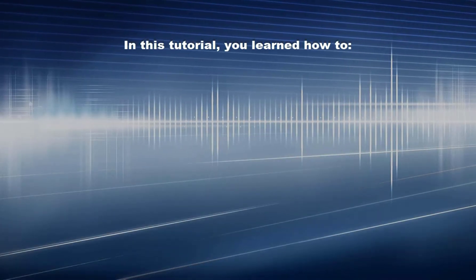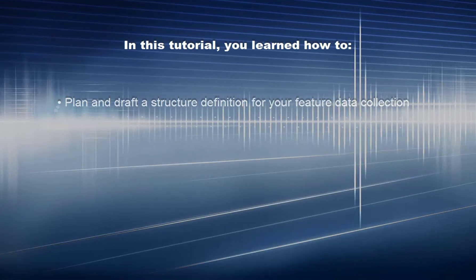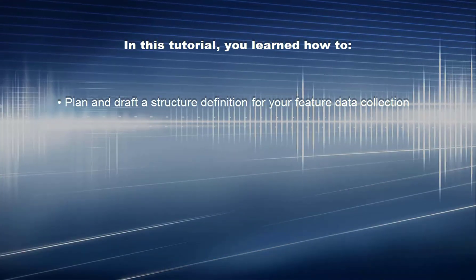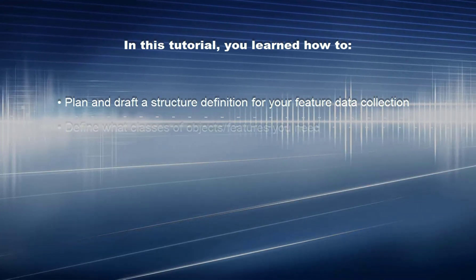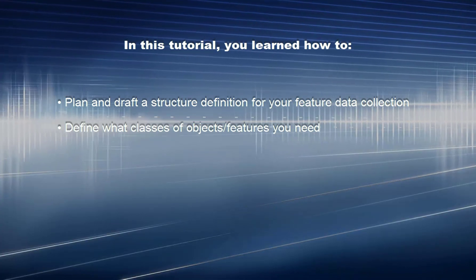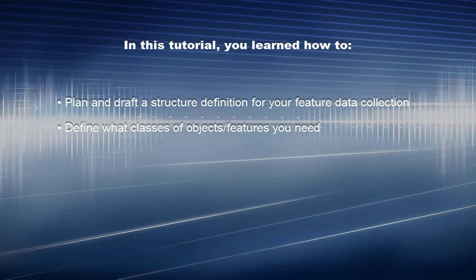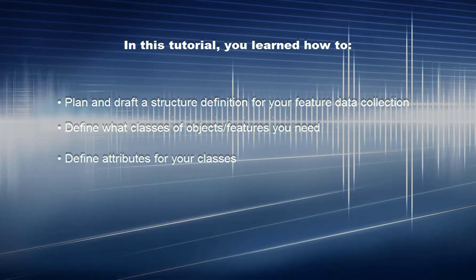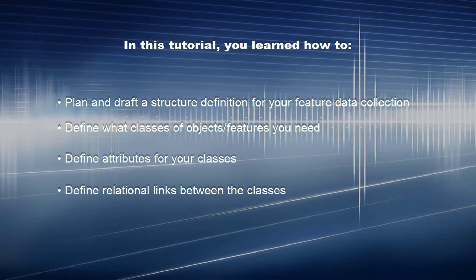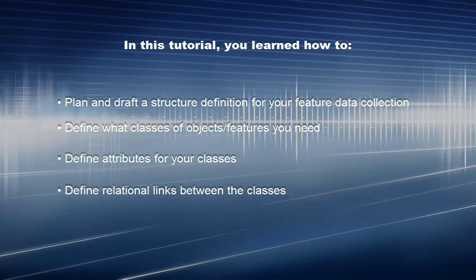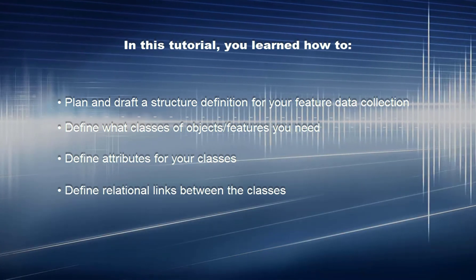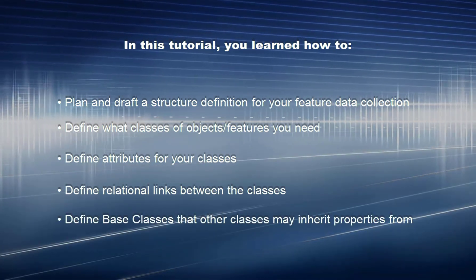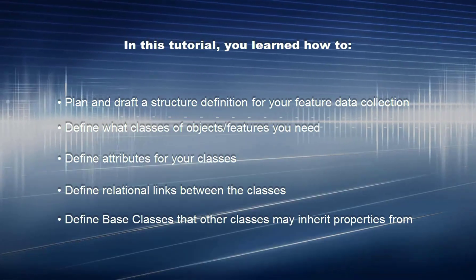In this tutorial, you learned how to plan and draft a structure definition for your feature data collection: define what classes of objects and features you need, define attributes for your classes, define relational links between the classes, and define base classes that other classes may inherit properties from.